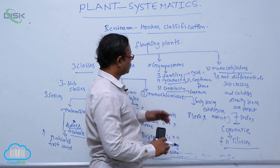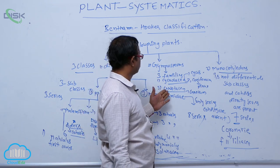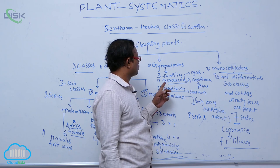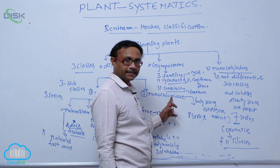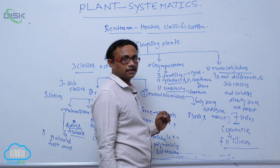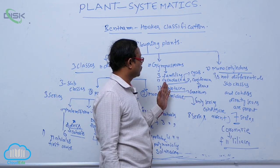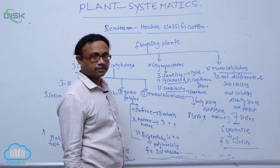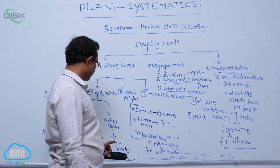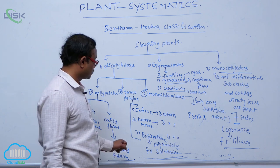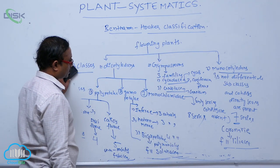In Gymnosperms, there are no subclasses, series, or cohorts — directly, three families are present: Cycadaceae (example: Cycas), Coniferae (example: Pinus), and Gnetaceae (example: Gnetum). Gymnosperms means naked seeds — seeds are not covered with a fruit wall. In this chapter, we discuss three families: the first is Fabaceae, the second is Solanaceae, and the third is Liliaceae. That is known as the Bentham and Hooker system of classification.